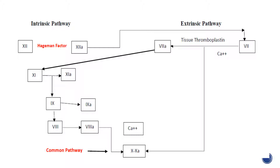Looking at the intrinsic pathway in more detail: activation of factor 12 leads to activation of factor 11, which acts upon factor 9, forming factor 9a. These reactions require calcium ions. Activated factor 9a, in the presence of factor 8a — derived from factor 8 — and calcium ions, causes the activation of factor 10, after which events are similar to the extrinsic pathway.